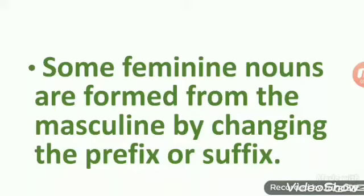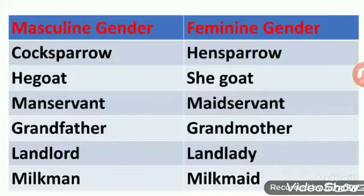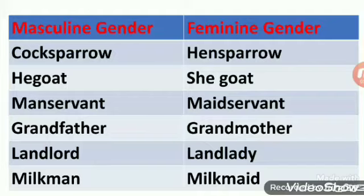Some feminine nouns are formed from the masculine by changing the prefix or suffix. For example: cock-sparrow becomes hen-sparrow, he-goat becomes she-goat, man-servant becomes maidservant, grandfather becomes grandmother, landlord becomes landlady, and milkman becomes milkmaid.